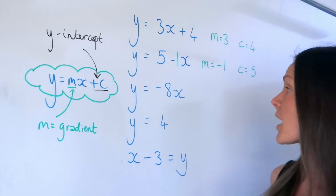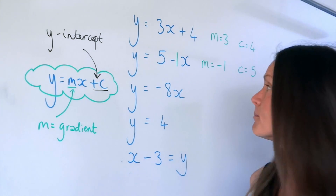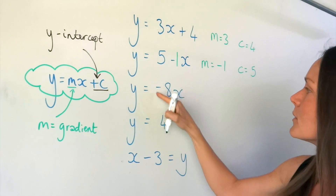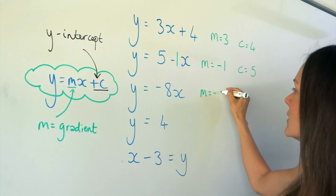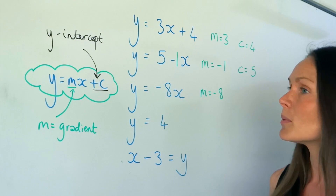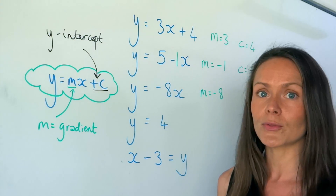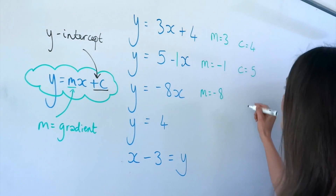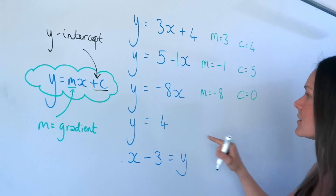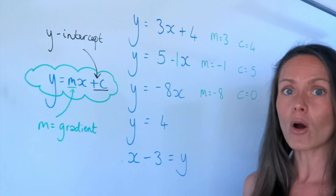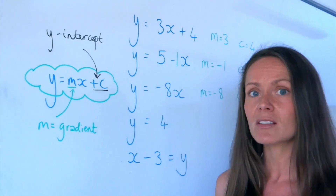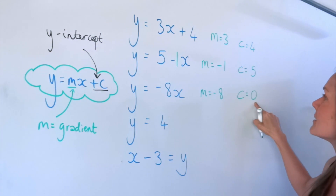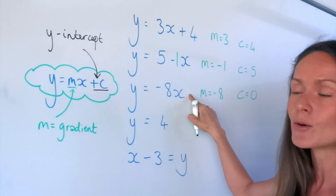In this one I can see the gradient, but there's no number by itself. The gradient is the number in front of the x, so m is minus 8. But because there's no number by itself, the c value must be 0. So this straight line passes through the origin, the point (0, 0). That's why the y-intercept is 0 and there's no number by itself.